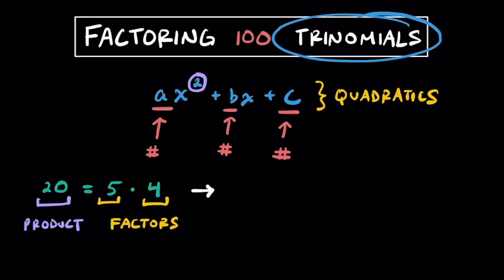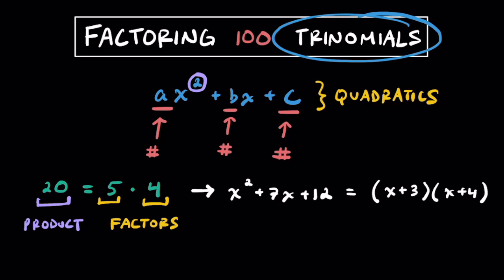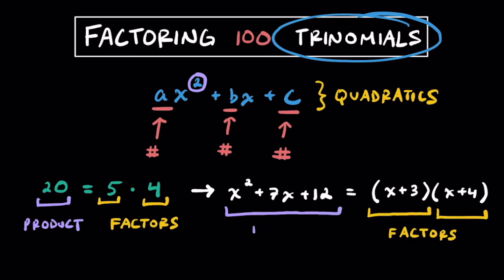Now let's apply this concept to factoring trinomials. Imagine you have a trinomial like x squared plus 7x plus 12, and we could write this as the quantity of x plus 3 times the quantity of x plus 4. So x plus 3 is one factor and x plus 4 is another factor — each of these factors is a binomial with two terms. When you multiply these two together and distribute, we get this product. So throughout this video I'm going to take 100 different expressions and turn them into factored form.